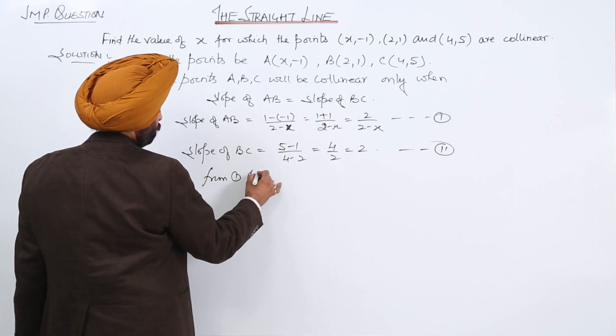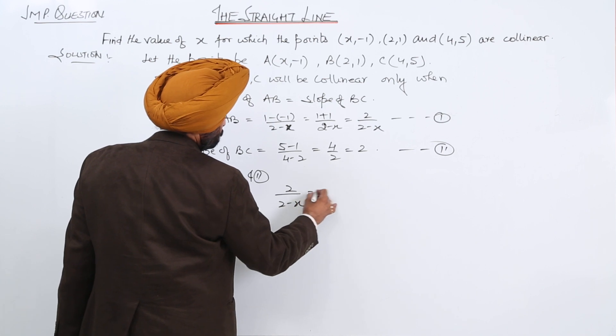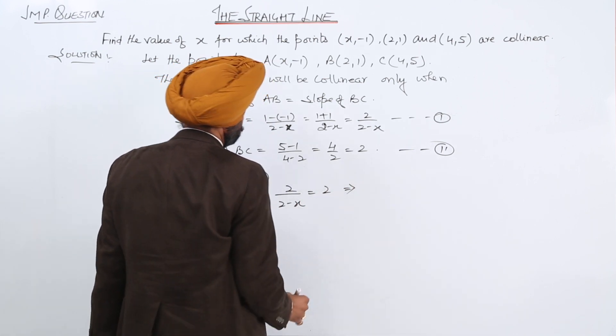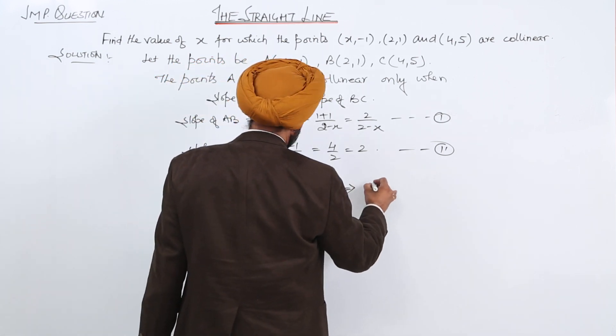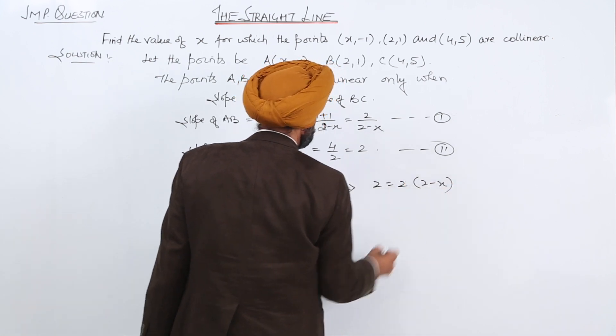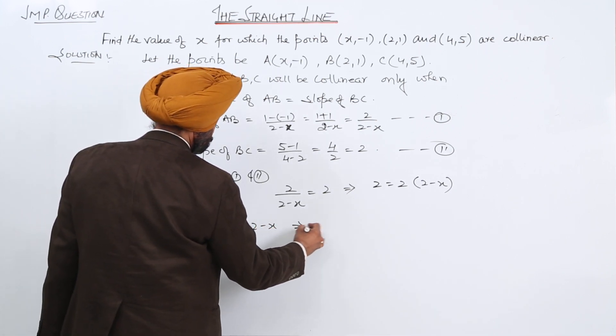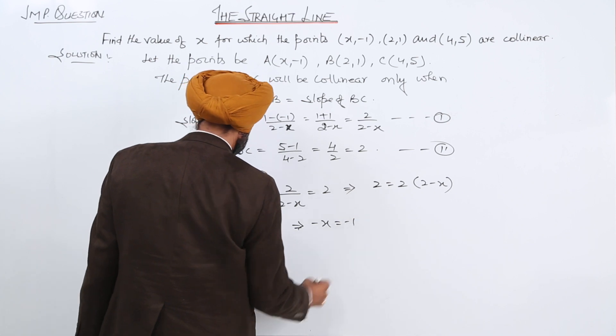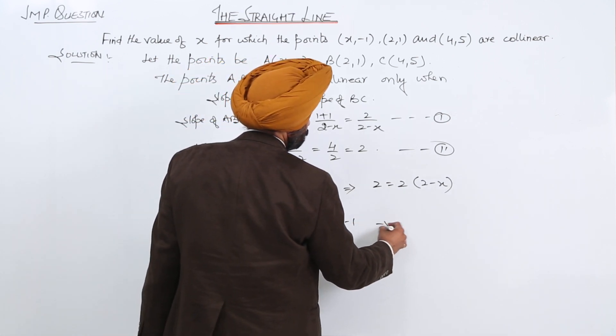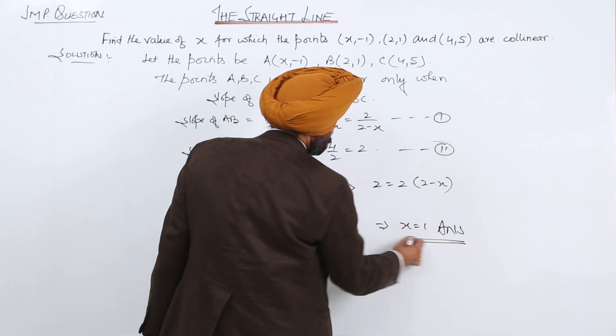Now, from equations 1 and 2, 2 upon 2 minus x is equal to 2. So 2 is equal to 2 times 2 minus x, 1 is equal to 2 minus x, therefore x is equal to 1. And this is the answer.